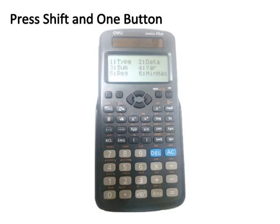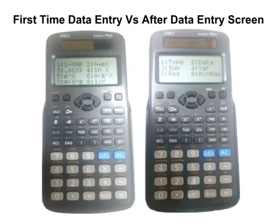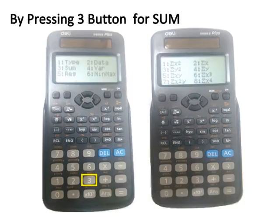For each measure, press Shift then 1 again to return to this screen and select the required measure. Note: the first time you press Shift+1 before data entry, you see one screen; after data is stored, pressing Shift+1 shows a different screen with the available measures. Press button 3 for Sum, then press button 1 and equal to get the result for Σx². In this way you can retrieve all measure values.